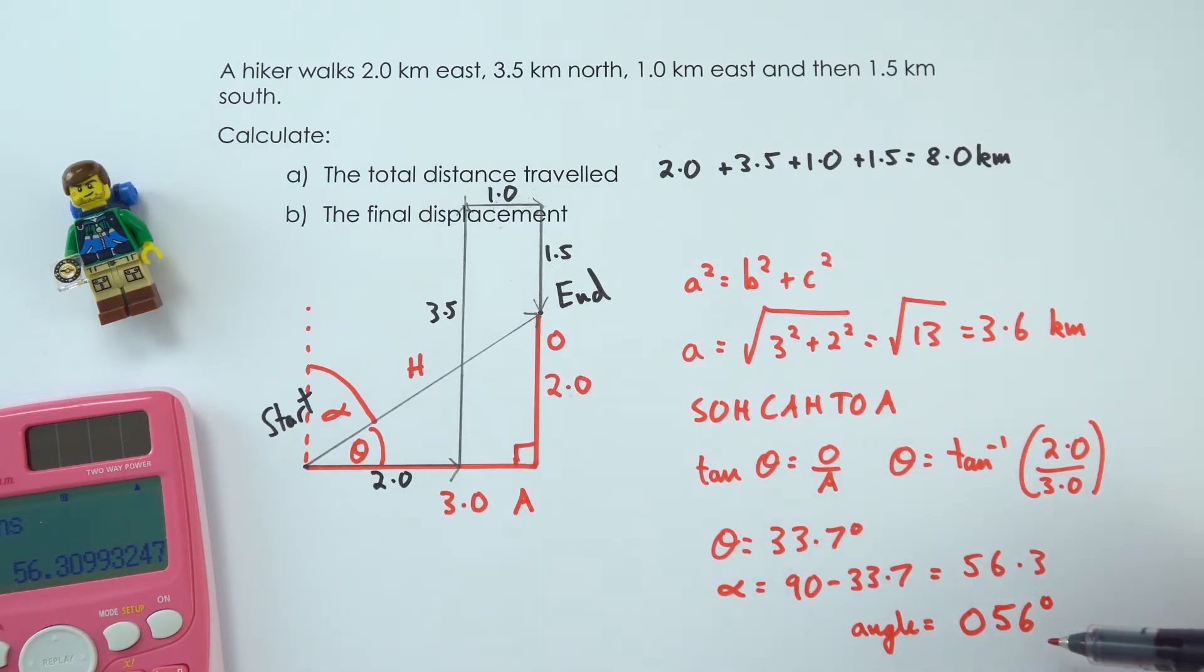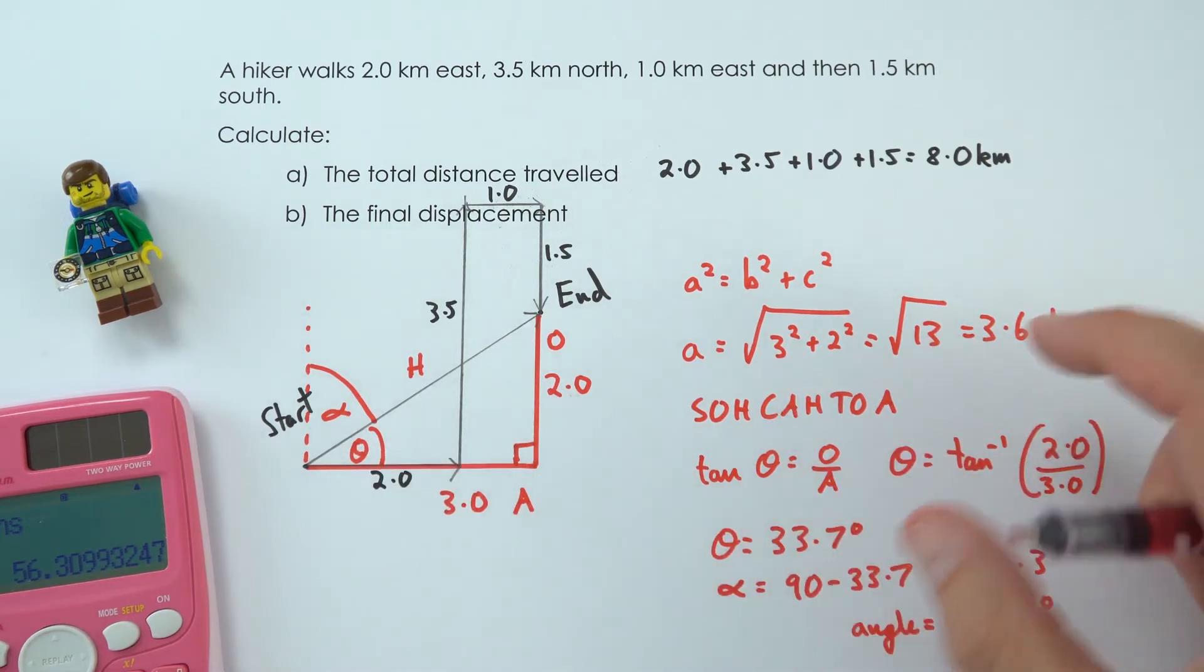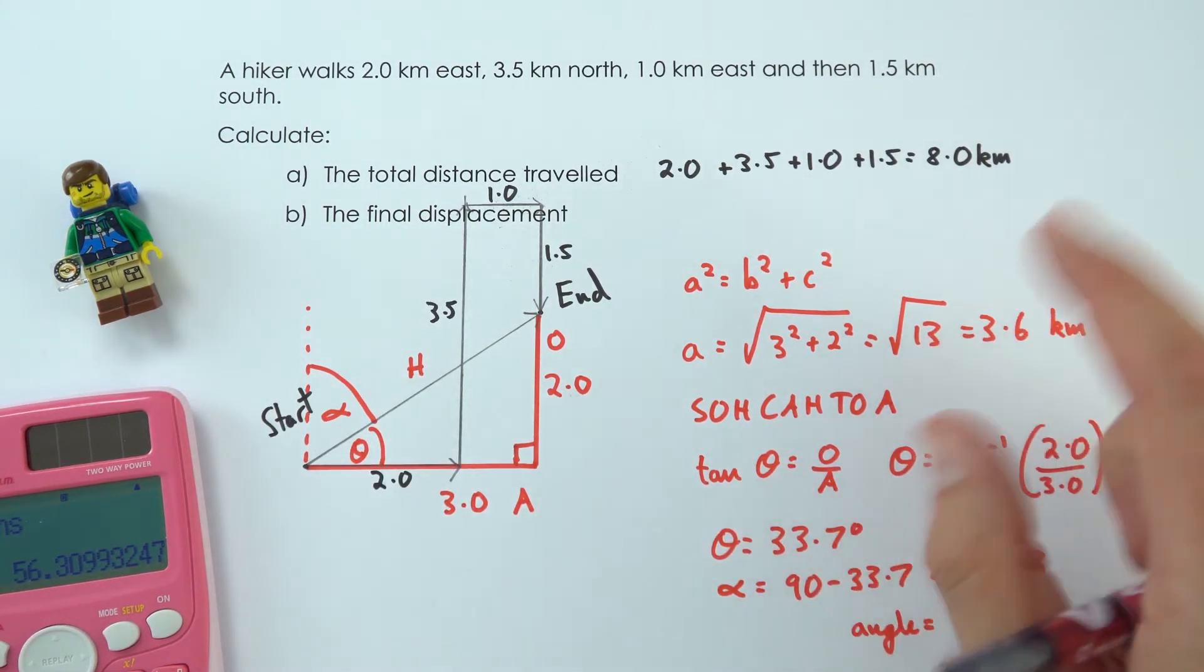So now the actual displacement, the final answer, is a displacement of 3.6 km at an angle of 056 degrees. Now that's quite involved—that's using mathematics. We could have done it using a protractor, and that's often a nice way if you get a scale drawing, but this just shows the difference between displacement and distance.